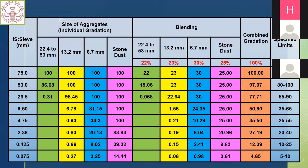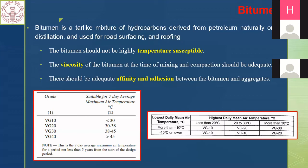Now moving to bitumen — the second major material in bituminous mix. Bitumen acts as the binder and typically constitutes only four to six percent of the mix, yet it significantly affects the performance of the mix.